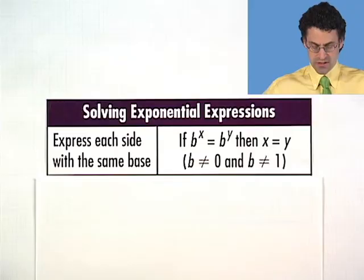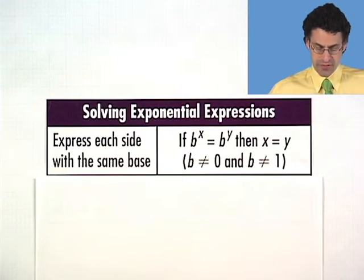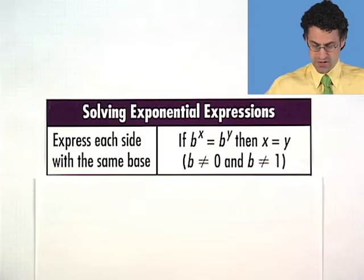Sometimes equations have the unknown variable actually in the exponent. These are exponential equations, and there are ways of solving them. The trick is to get that unknown exponent down to the ground level with all the other base terms. Let's talk about a general method for solving certain exponential equations.